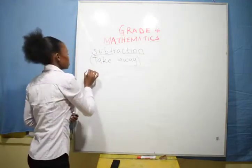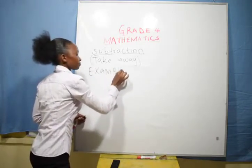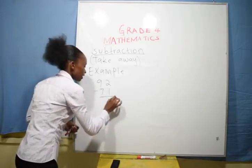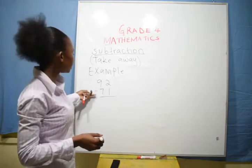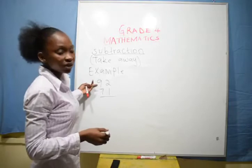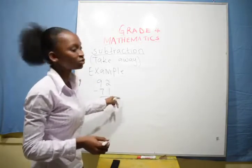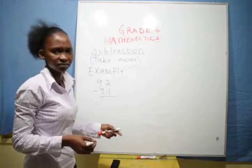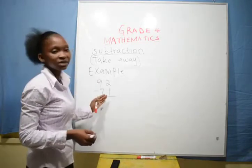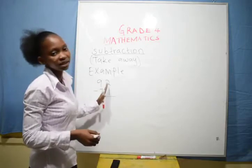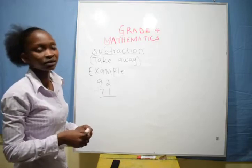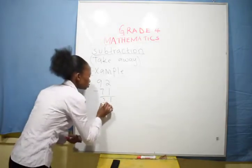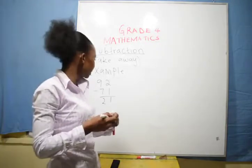So let us have some examples. If you are given a number like 92 minus 71, always write the subtraction sign — never forget the subtraction sign. So we are supposed to subtract from the ones side. Which digits do we have? We have two and one. What about tens? We have nine and seven. So let us subtract: 92 minus 71 beginning from the ones side. What is two take away one? Two take away one is one. What about nine take away seven? Nine take away seven is two. Therefore, 92 take away 71 is 21.